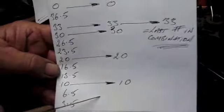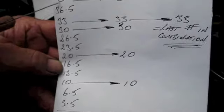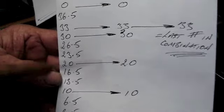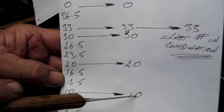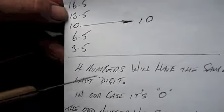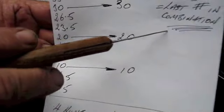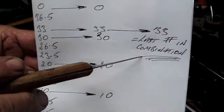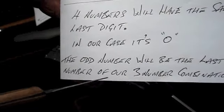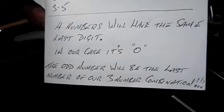So those five whole numbers, we pull out of the list. Zero, thirty-three, thirty, twenty, and ten. In this case, that happens to be how they worked out. All the numbers will have the last digit the same. In this case, it's all zeros. Four numbers will have the same last digit. In this case, they're all zeros. The odd number, you pull that one out, and that number will be the last number in our combination. So we pull that number out and write that down. That's our last number. The odd number will be the last number of our three number combination. So write that down, thirty-three.